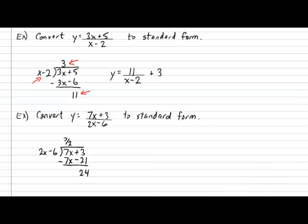So our rule in standard form is y equals 24, which comes from our remainder, over 2x minus 6, which comes from our divisor, plus 7 over 2. And this is, in fact, written perfectly in standard form.